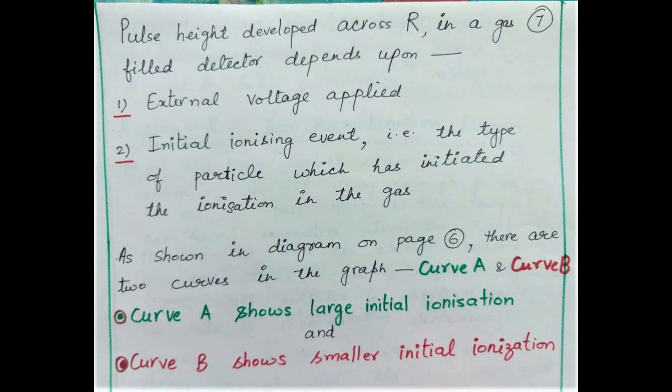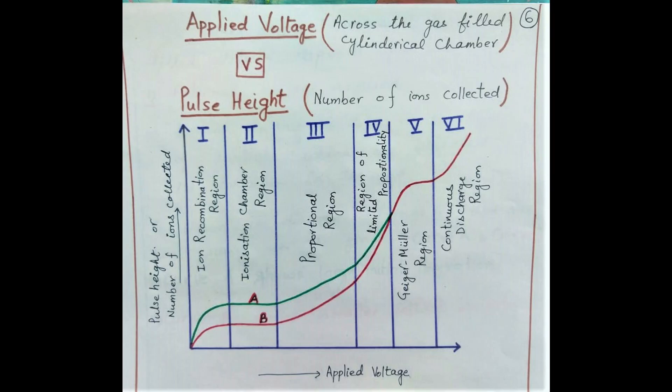The pulse height produced across the resistance R depends upon two factors mainly: first, what is the operating voltage of the detector, and secondly, what is causing the initial ionization — whether the initial ionizing event is caused by an alpha, beta, light ion, gamma radiation, or some neutral particle. Different types of detectors are designed on the basis of the applied voltage and what type of particles or radiations we want to detect.